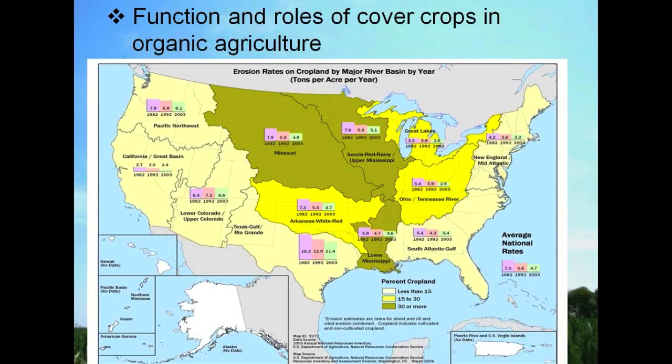A map of erosion rates on cropland in the major river basins in the U.S. shows that between 1982 and 2003 there's a reduction in erosion, likely due to conservation tillage practices that leave heavy residue on the surface. We see the same effect from cover crop mulches on the surface.